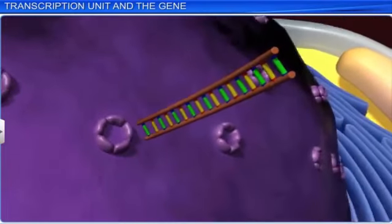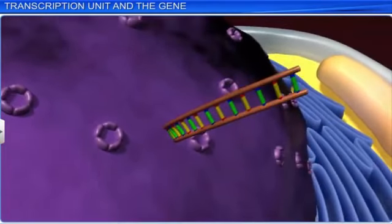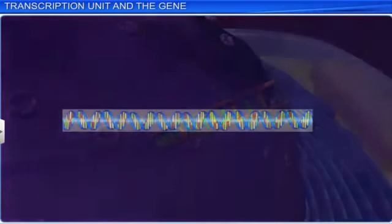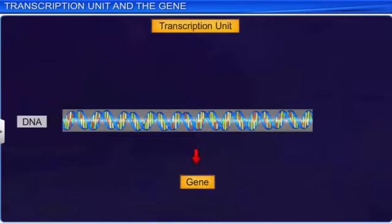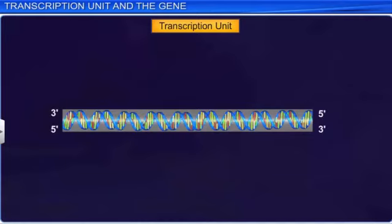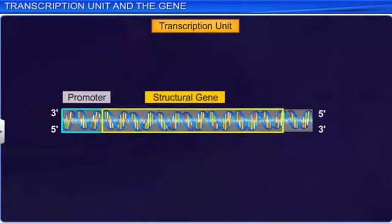The segment of DNA which takes part in the transcription process is called the transcription unit, and it encodes for at least one gene. Let us understand the transcription unit in detail. It consists of three main regions: namely, the promoter, the structural gene, and the terminator.